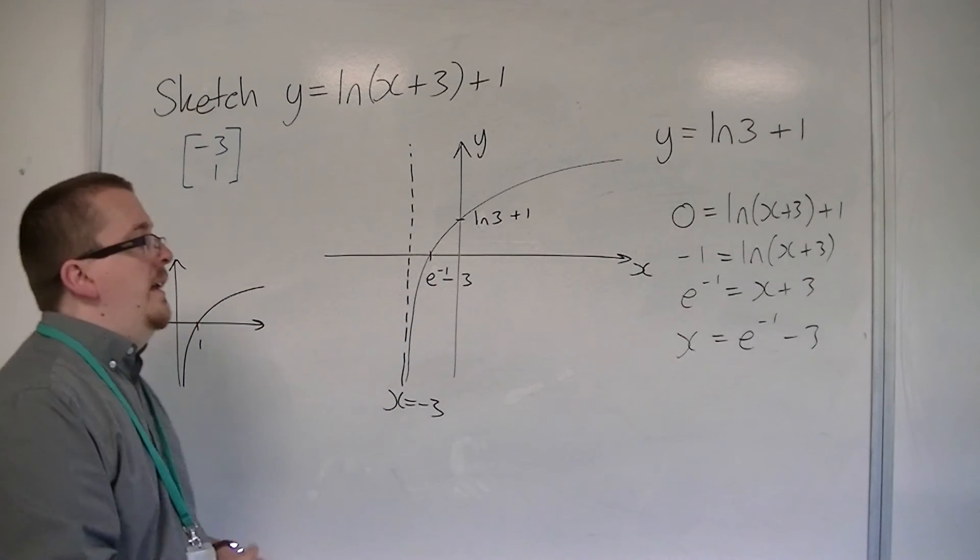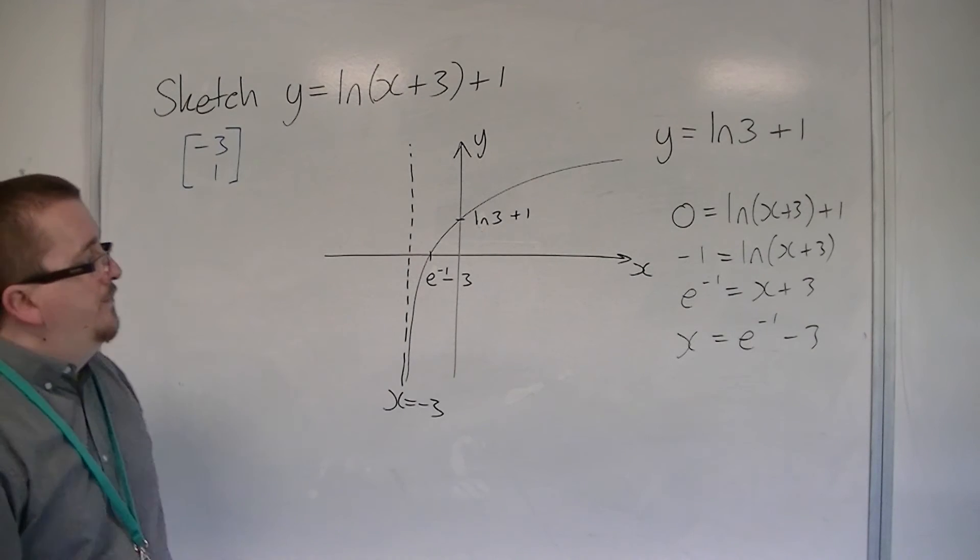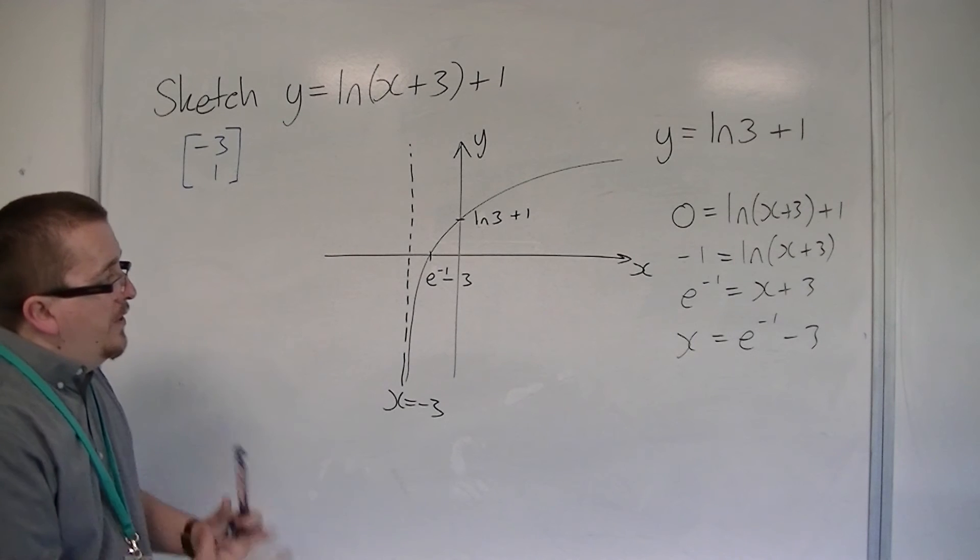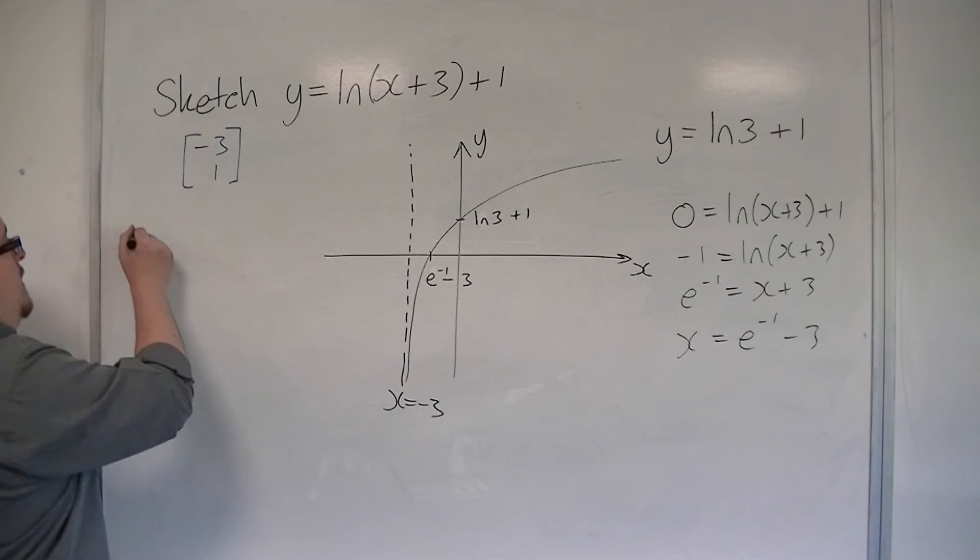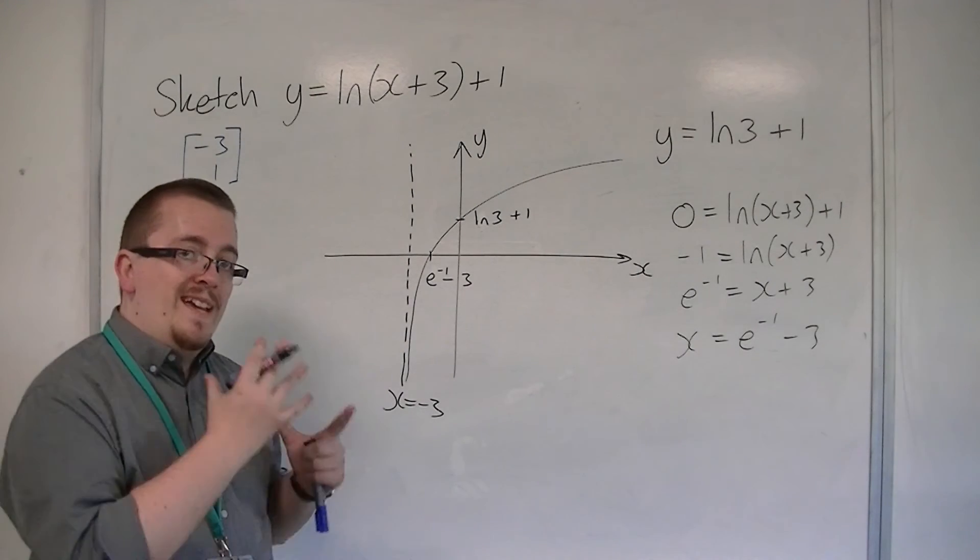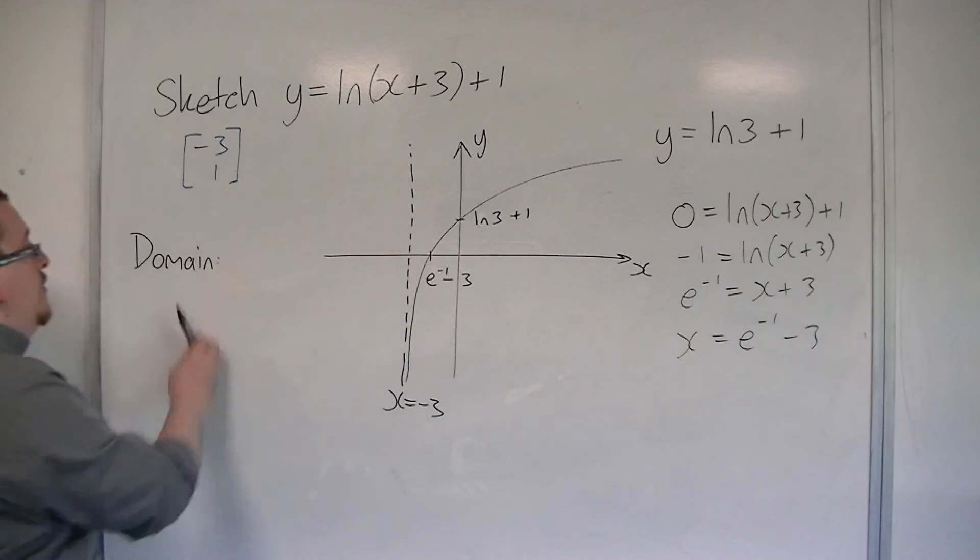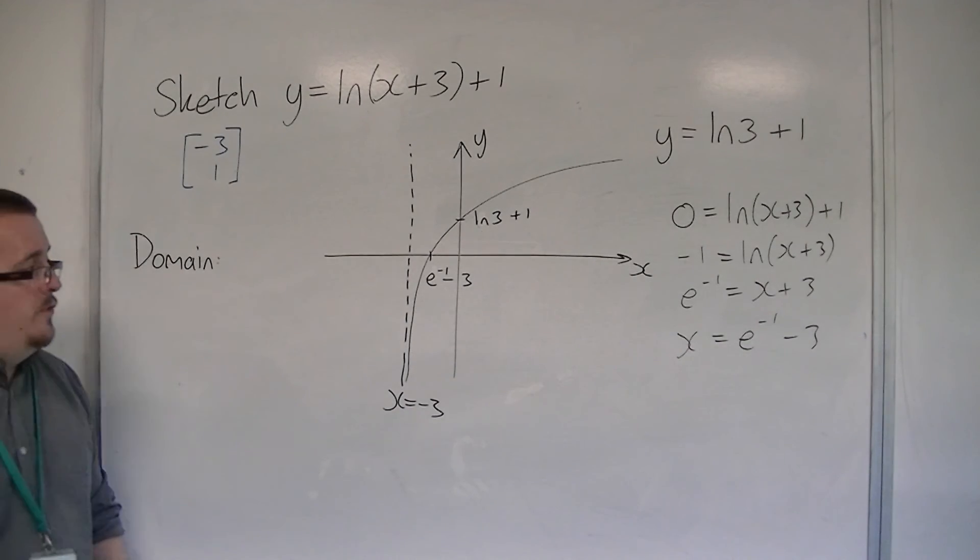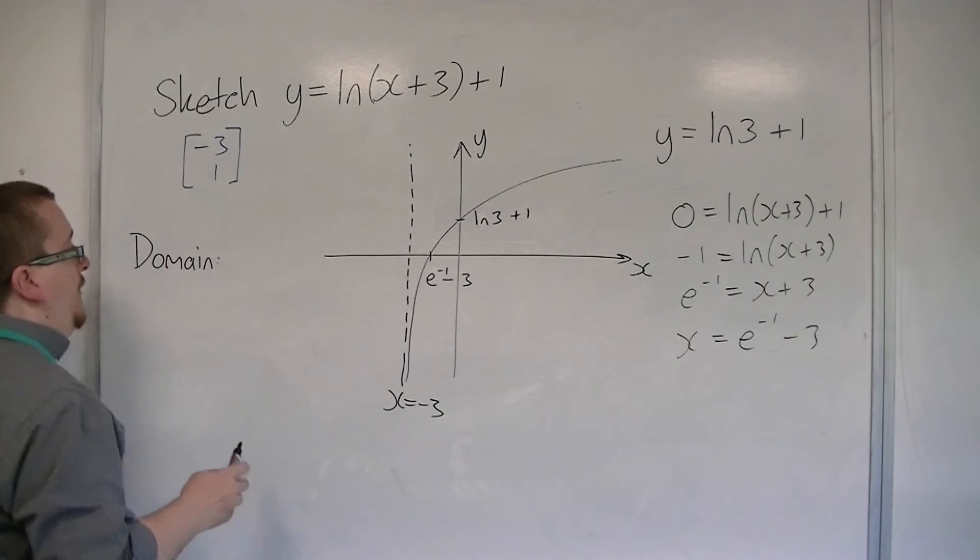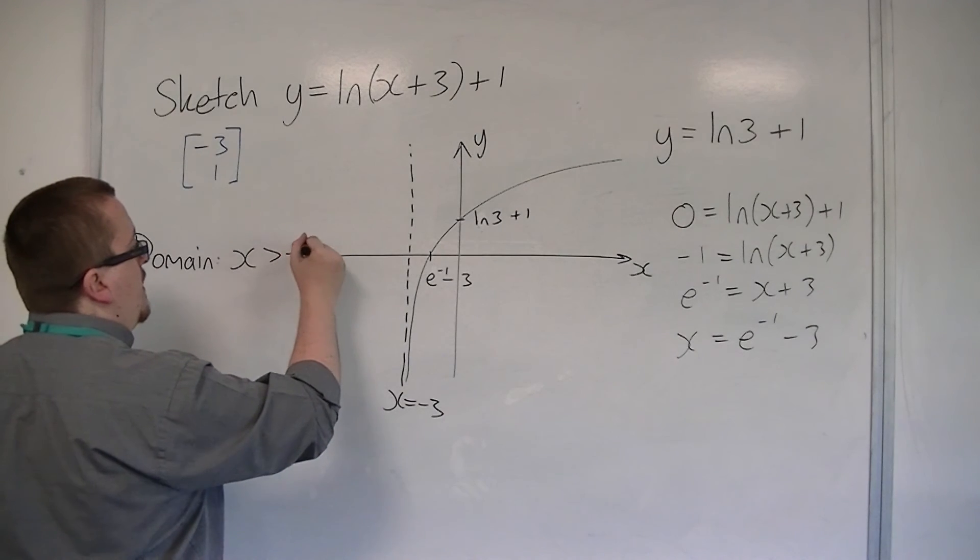Now, what I also want to look at is the domain and range of this function. So, following on from the previous video, if I'm considering the domain, then that's all the values of x that this graph exists for. So I can see that the curve does not exist to the left of that asymptote. It only exists to the right of it. And so the domain is x is greater than minus 3.